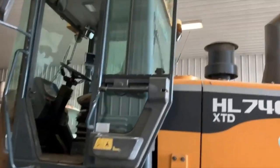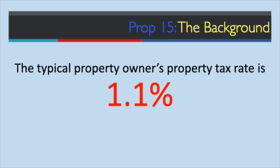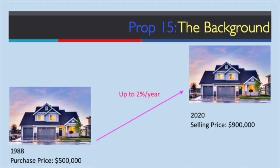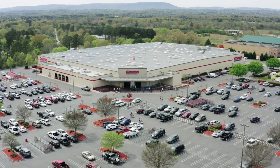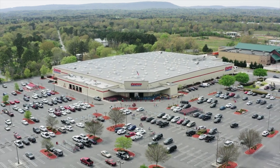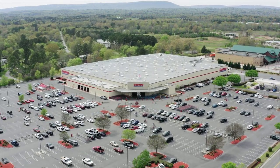The typical property owner's property tax rate is 1.1 percent. In the year a piece of land or building is purchased, its taxable value is typically its purchase price. Each year after that, the property's taxable value is adjusted for inflation up to 2 percent. When a property is sold again, its taxable value is reset to its new purchase price. The taxable value of most land and buildings is less than what they could be sold for, because sale prices grow faster than 2 percent per year. Unlike land and buildings, business equipment is taxed based on how much it could be sold for today.